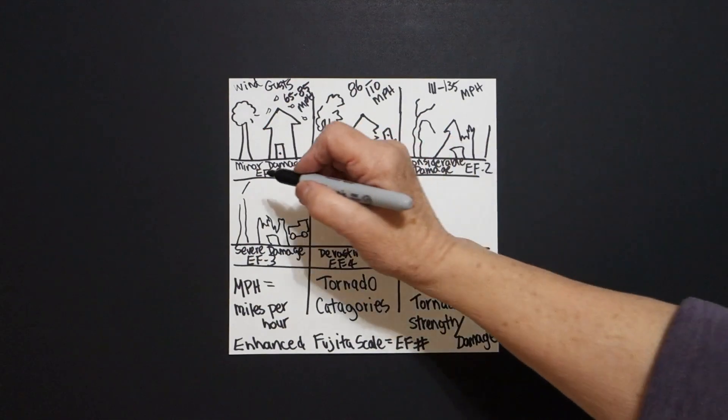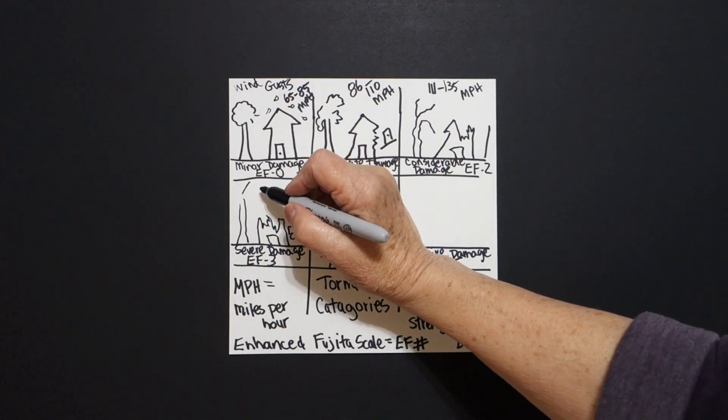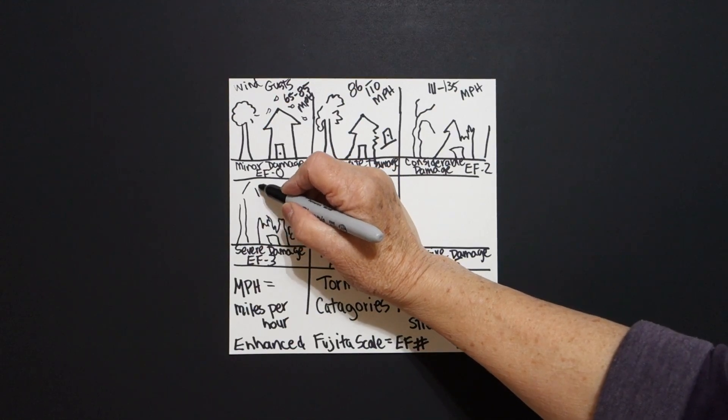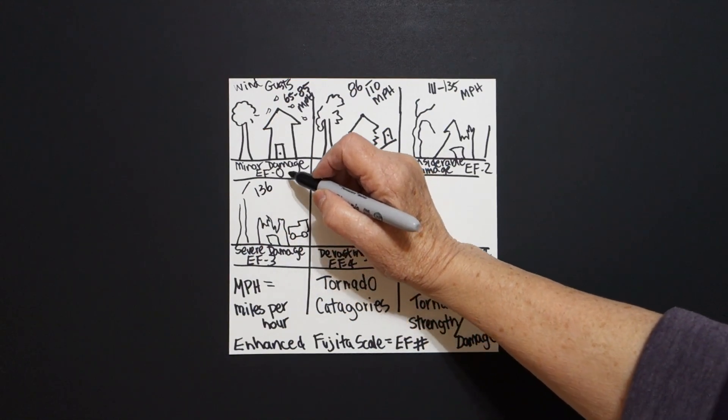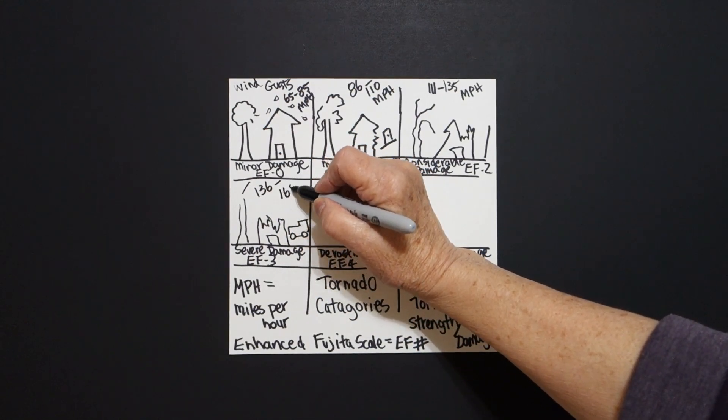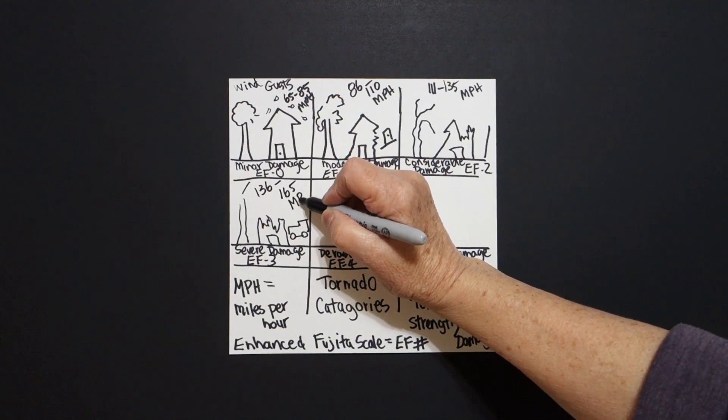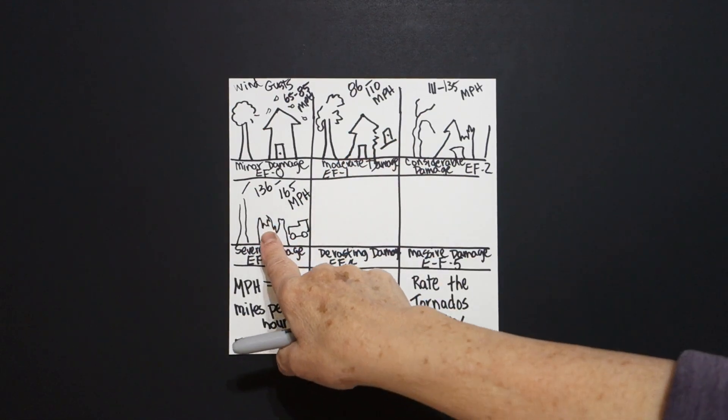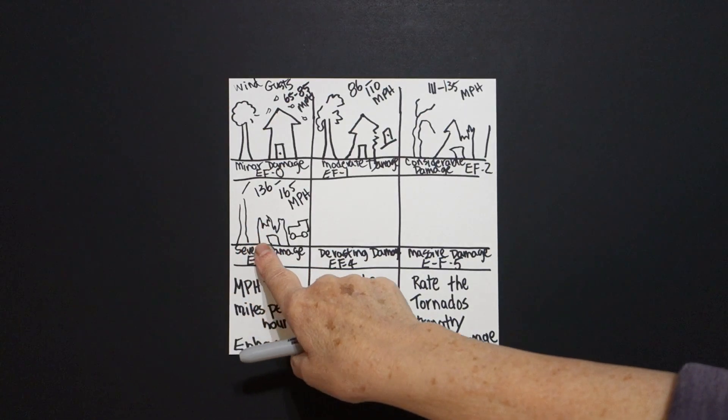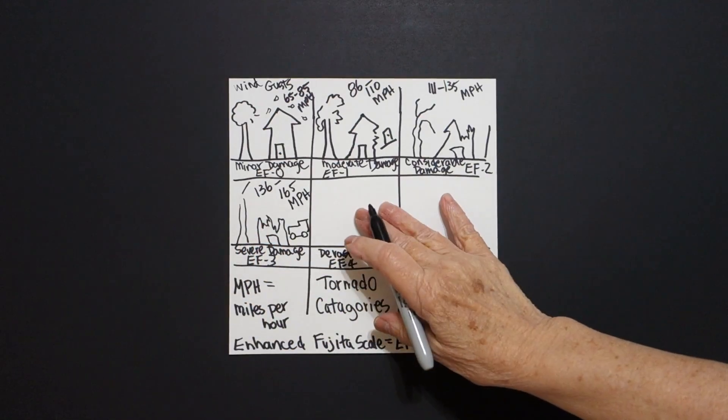And this is severe damage. We're introducing a truck or a car. 136 miles to 165 MPH. House doesn't look so good. Tree's pretty much gone. Alright, next box.